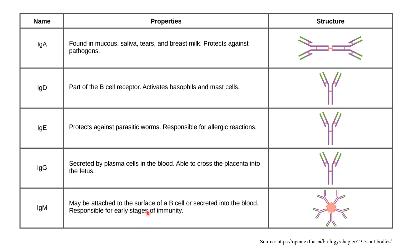IgM may be attached to the surface of a B cell or secreted into the blood. It is responsible for the early stages of immunity.